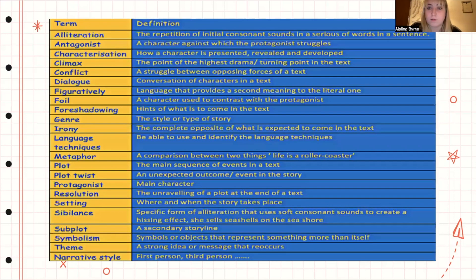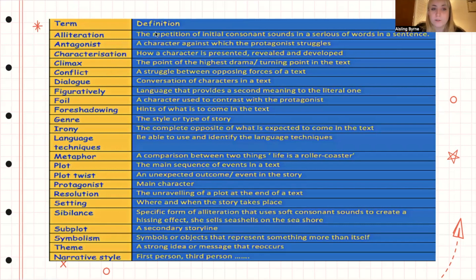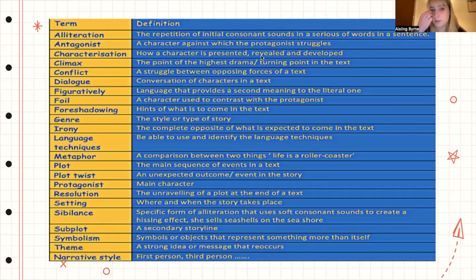Moving on to key terms and definitions — this is the language we need to use when talking about fiction. Alliteration is the repetition of initial consonant sounds in a series of words. An antagonist is a character against which the protagonist struggles — this is the villain of the story. Characterization refers to how a character is presented, revealed, and developed.